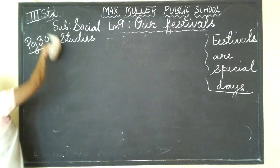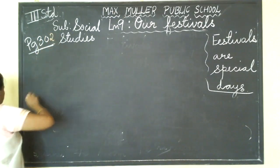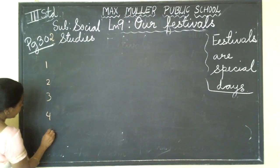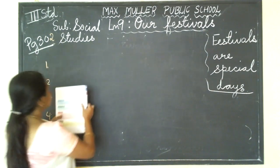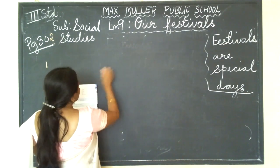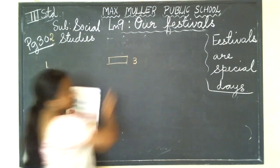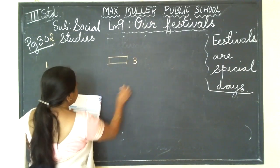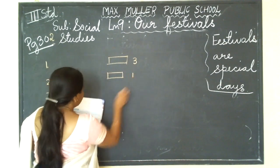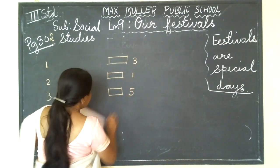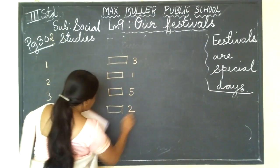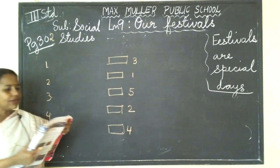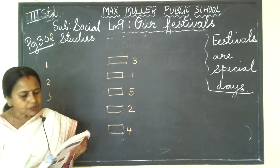Now page number 302 — here there are 5 items for match the following. First word is Sevaiya — you write 3. Second word, write 1. Third word, write 5. Fourth one, write 2. Last one, write 4. Now I will match and tell you. Diwali matches with Diya. Rakshabandhan matches with Rakhi. Eid matches with Sevaiya — one sweet dish. Christmas matches with Santa Claus, who comes to give gifts to children on Christmas day. Holi matches with Colors — Holi is the festival of colors.